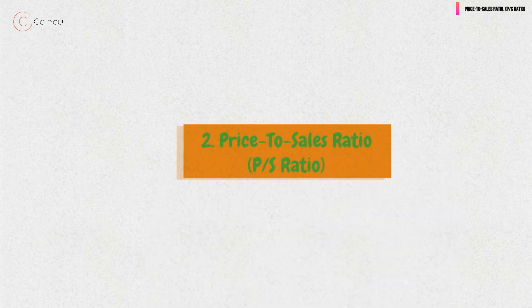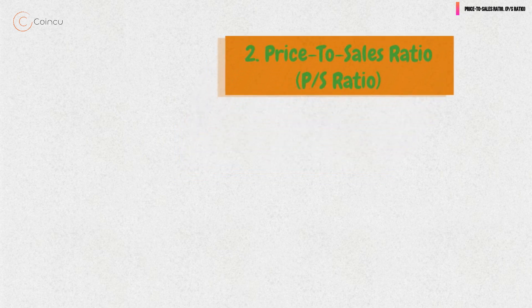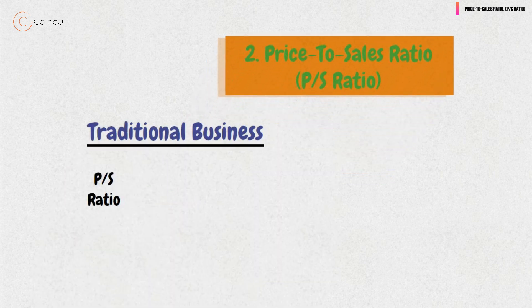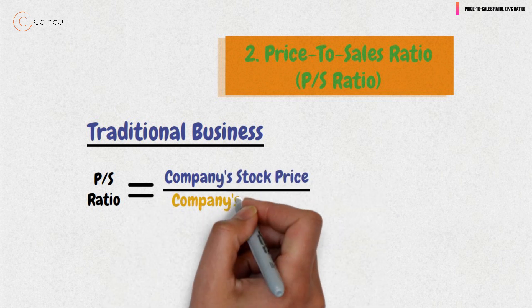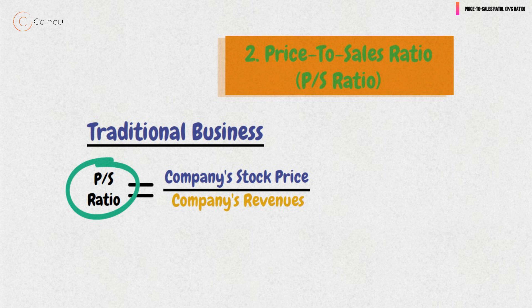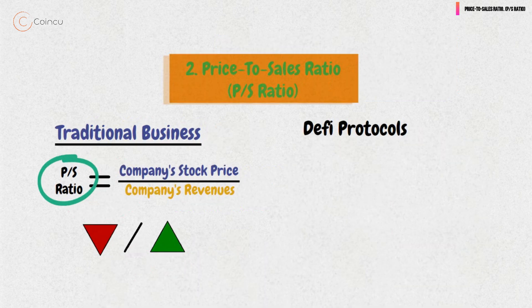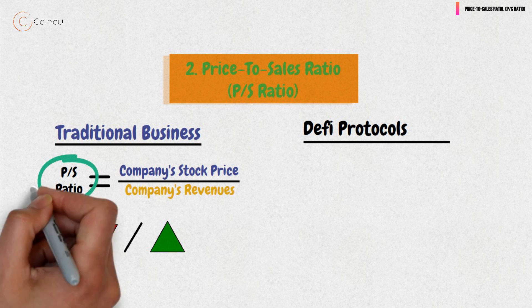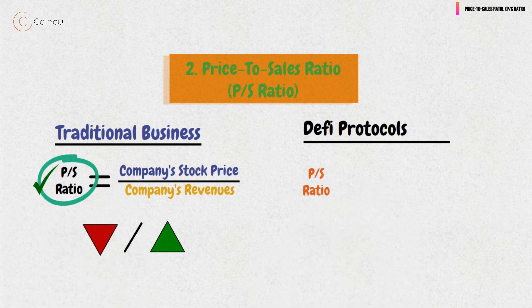In the case of a more traditional business, the price-to-sales ratio compares the price of the company's stock to its revenues. This ratio is then used to determine whether the stock is undervalued or overvalued.